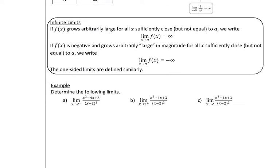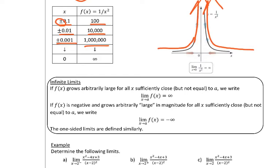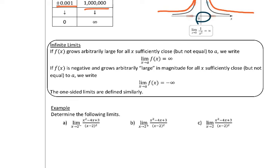By definition, if f of x grows arbitrarily large for all x sufficiently close but not equal to that value — we don't look at what happens when it equals 0 because it doesn't actually exist there — we see that the limit is infinity in this particular example. The same is true for the negative case: if f of x is negative and grows arbitrarily large in magnitude for all x sufficiently close but not equal to a, we can also get negative infinity. That would be like if the function goes down.